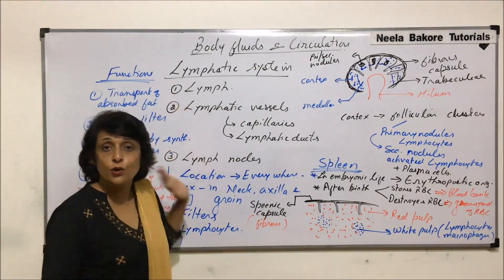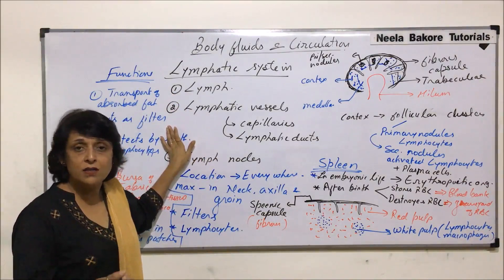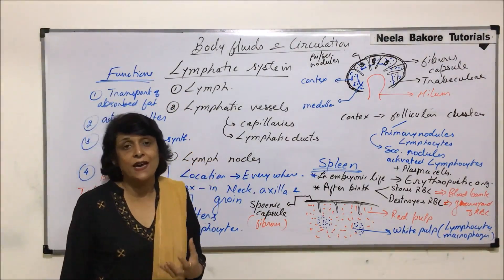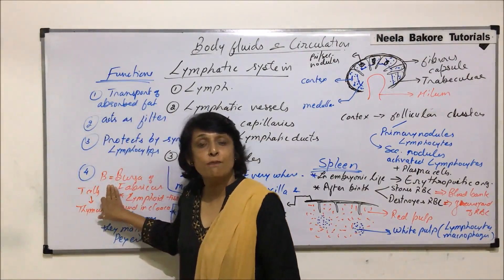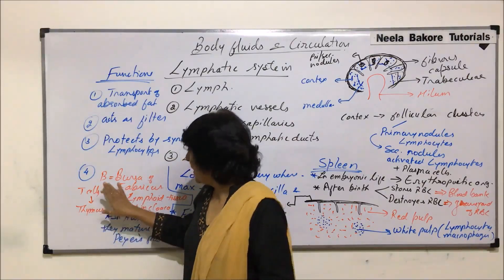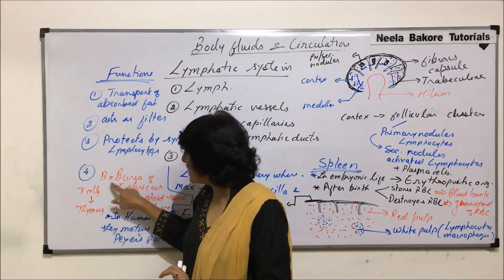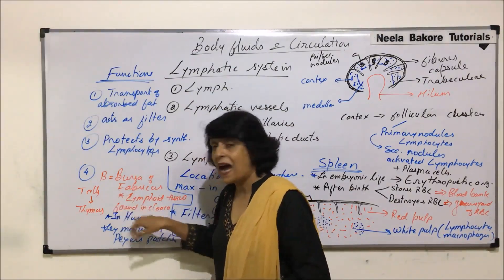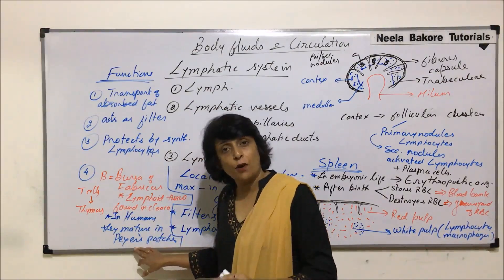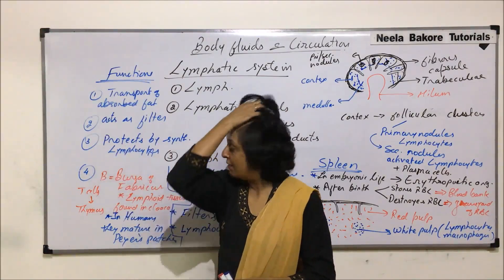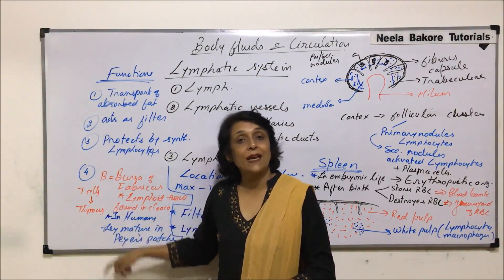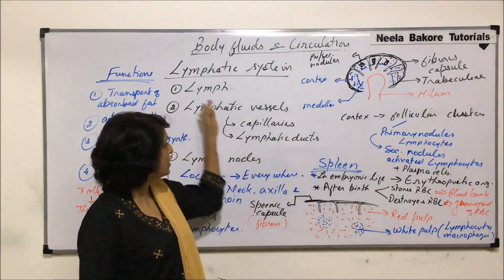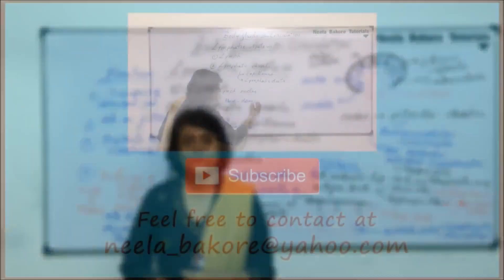So the functions of the lymphatic system are: transport of fat; acting as a filter to remove toxic substances, pathogens, and even cancerous cells; protecting our body by producing lymphocytes; and formation of B and T lymphocytes. B lymphocytes got their name from the bursa of Fabricius, found in lower vertebrates. In humans, their maturation takes place in Peyer's patches. T cells mature in the thymus. These are all lymphoid tissues where B and T lymphocytes mature.